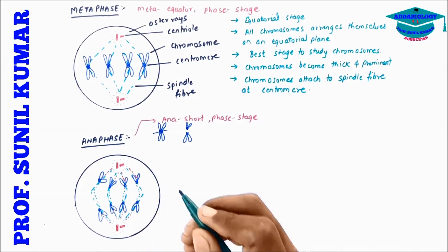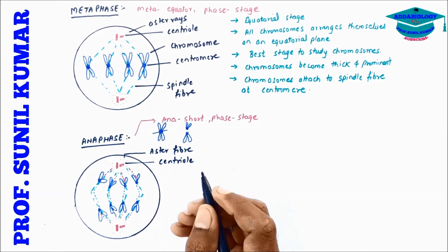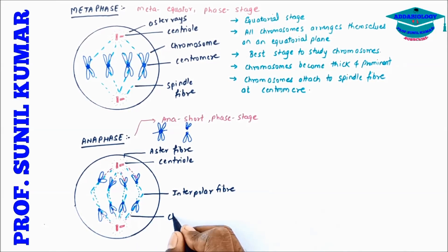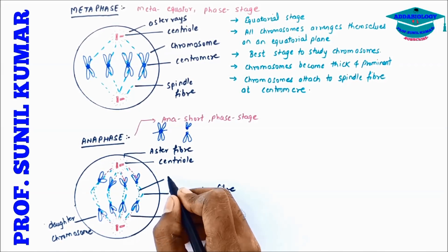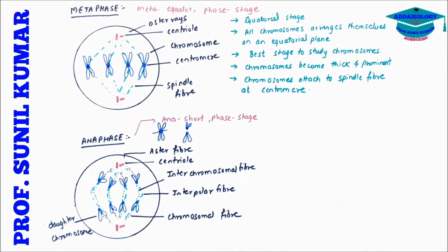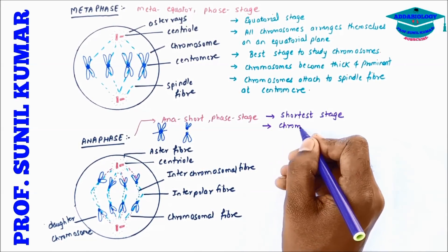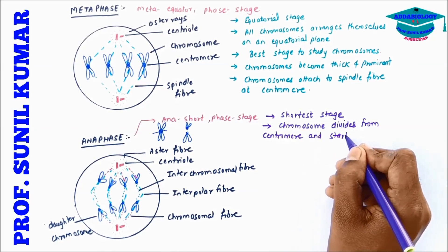Even though anaphase is the shortest phase, it has different types of fibers. The aster fiber arises from the centriole. The interpolar fiber connects both centrioles. The chromosomal fiber runs between the centriole and the chromosome, pulling the daughter chromosome towards the opposite pole. The interchromosomal fiber runs between the two daughter chromosomes, pushing them towards opposite poles.